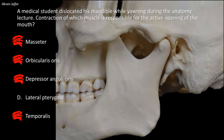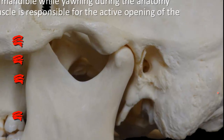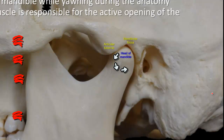Opening of the mouth takes place at the temporomandibular joint, a condyloid synovial joint between the head of the mandible on one side and the articular tubercle and mandibular fossa of the temporal bone on the other. This joint has an intraarticular fibrocartilaginous disc within the capsule. When the mouth opens, the head of the mandible rotates on the disc like a hinge joint, but additionally the disc carrying the head moves forward — gliding over the articular tubercle — resulting in more mouth opening.